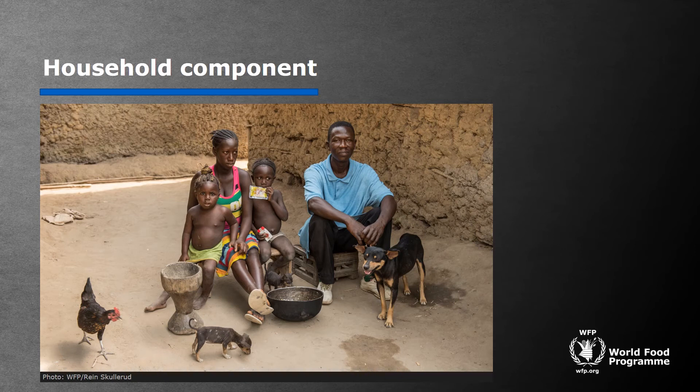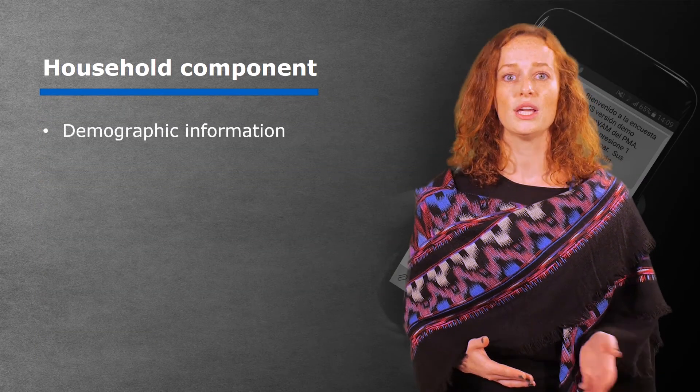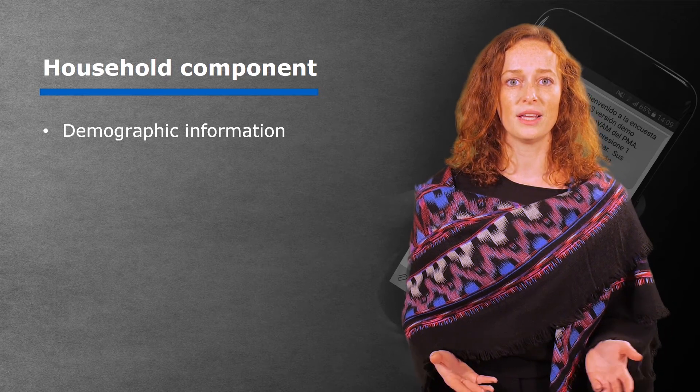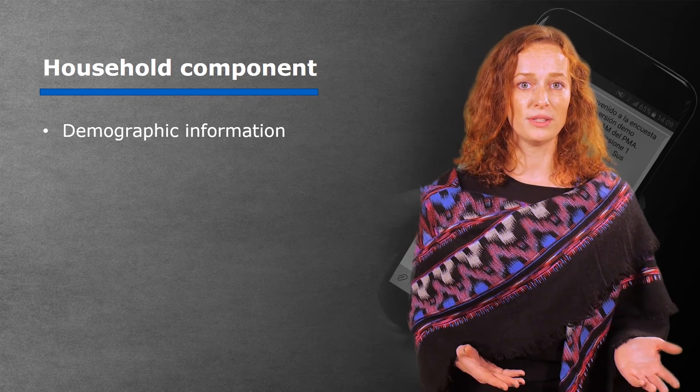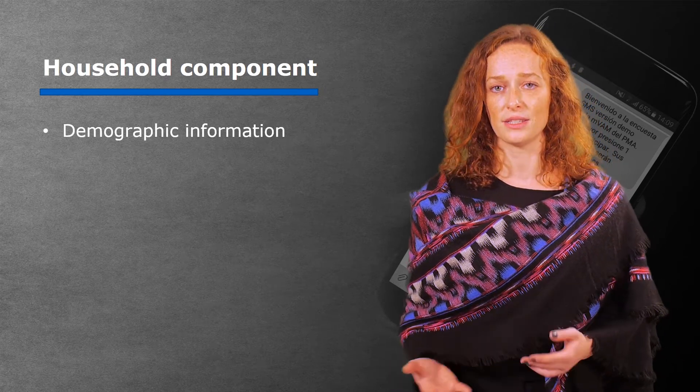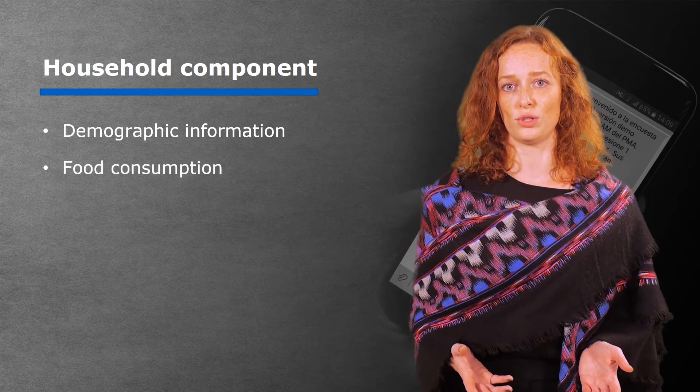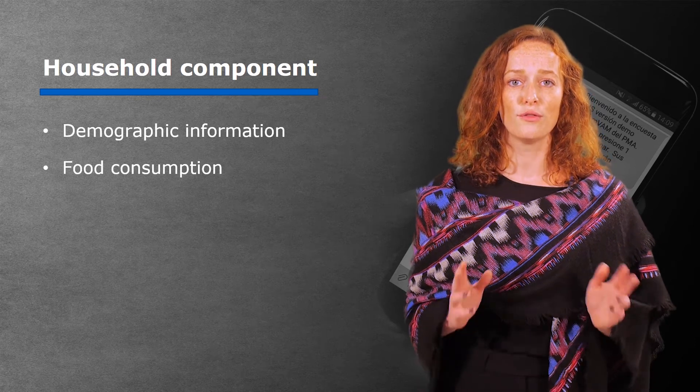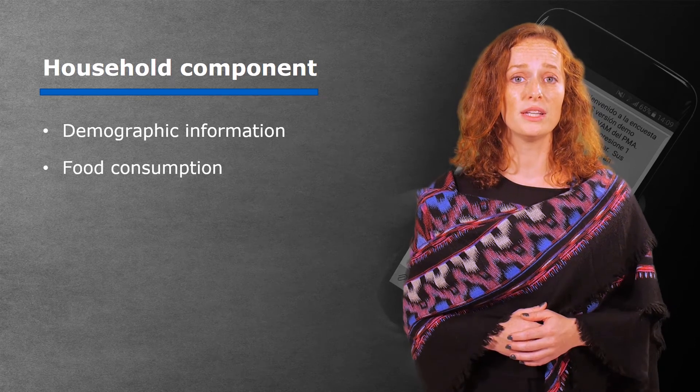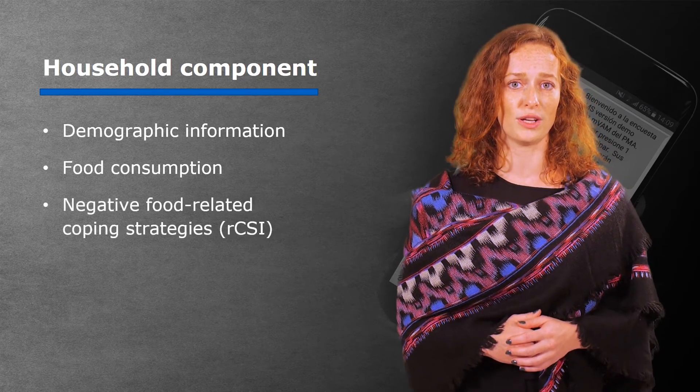In the household food security monitoring component of the questionnaire, there are other standard sections and questions. We ask about demographic information, including gender of the respondent and head of the household, age of the respondent, the household size, housing type, and displacement status, just to name a few. We also ask about the household's food consumption through our indicator, the food consumption score. The respondent is also asked about whether they use any negative food-related coping strategies.